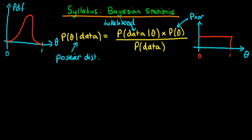The prior is often where non-Bayesians think that Bayesian statistics is being fairly subjective. Whilst that is true, as the amount of data you collect increases, the prior plays less and less importance in determining the posterior. There are also a number of methods for making the prior as objective as possible — things called Jeffrey's prior and reference priors, which we're going to cover in due course.